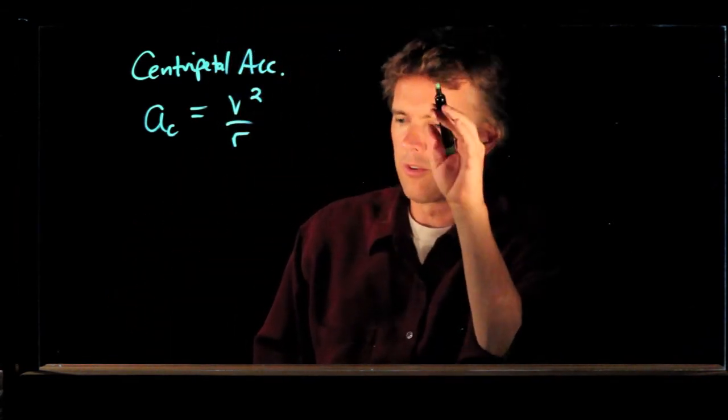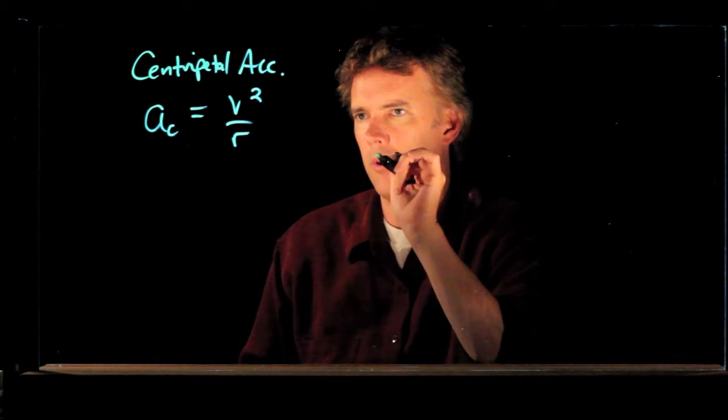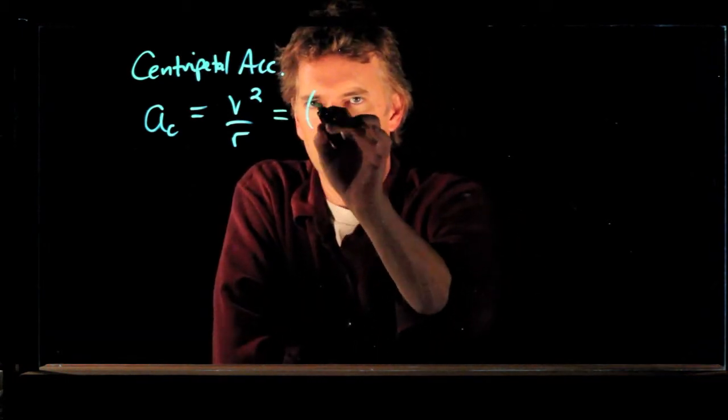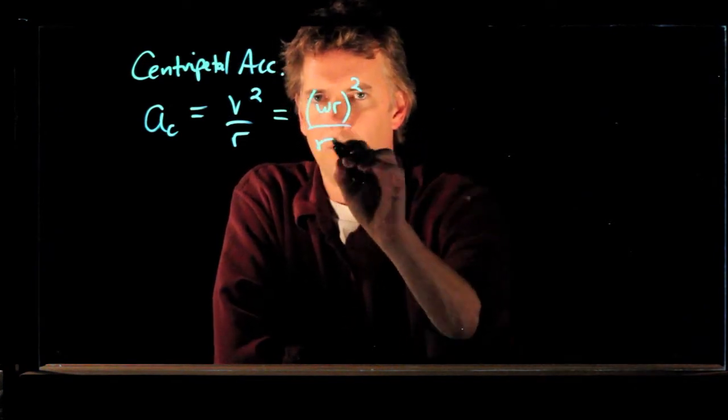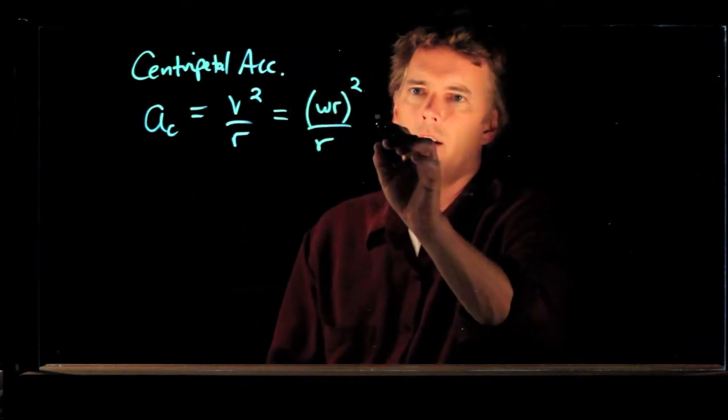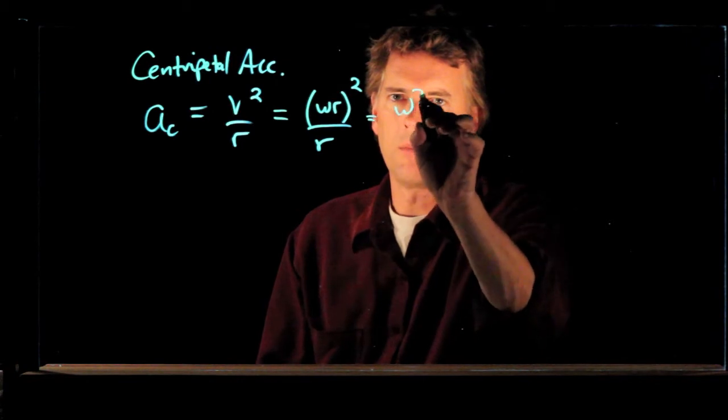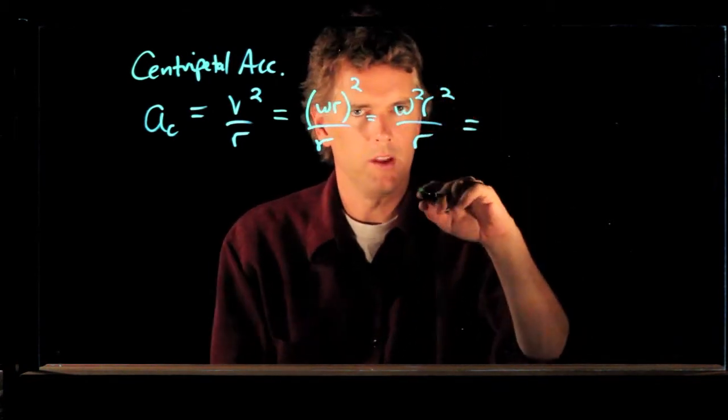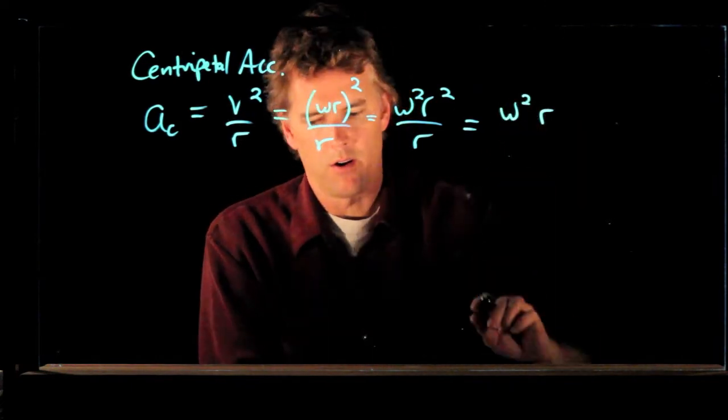Whenever you're moving in a circle, you always have centripetal acceleration. But we know what v is. v is equal to omega r. So this is omega r squared over r. And I can square that out. I get omega squared r squared divided by r. One of the r's cancels out, and I get omega squared r.